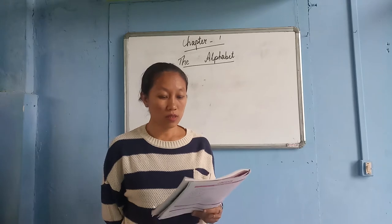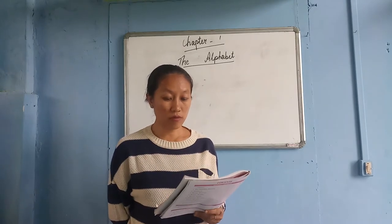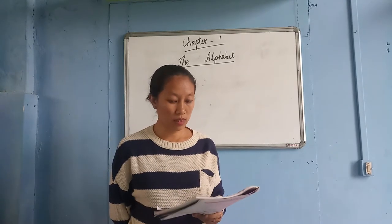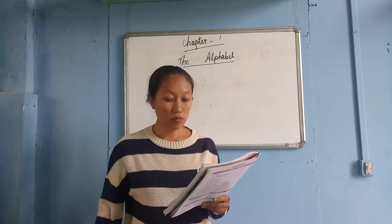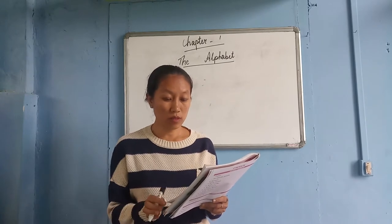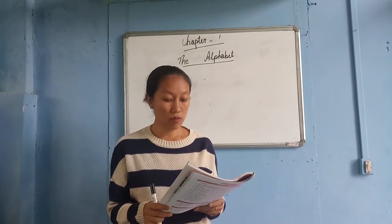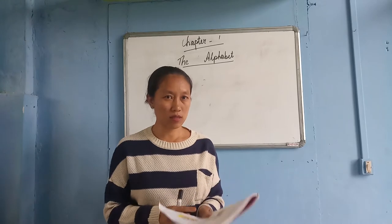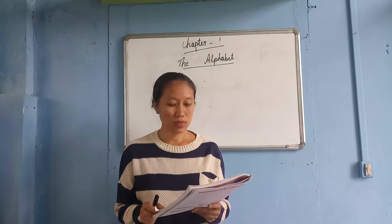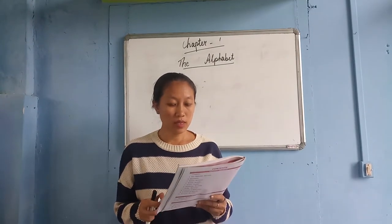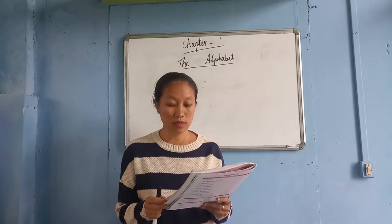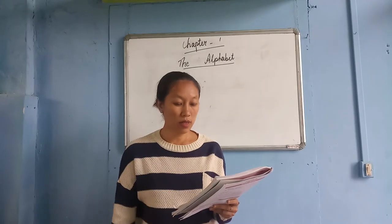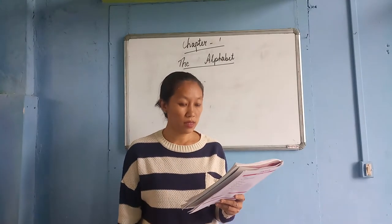A language is expressed in two forms: spoken and written. The written form of language uses some conventional symbols which are known as letters. The English language has 26 letters, which are collectively known as the alphabet.